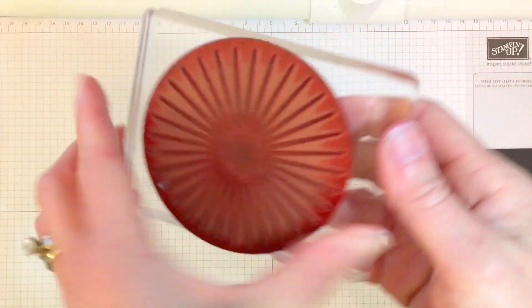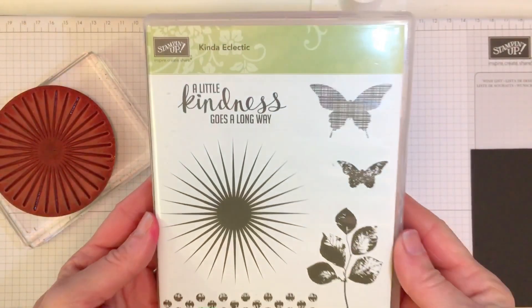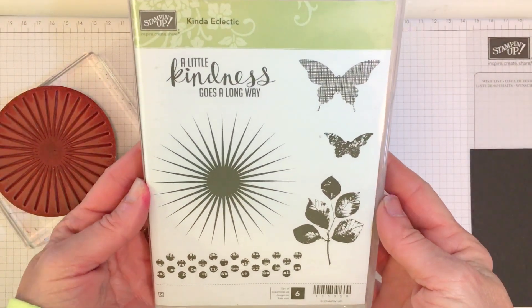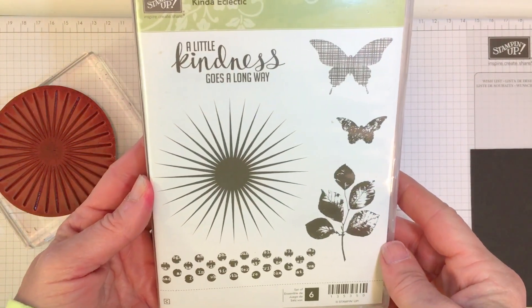Now, to make the medallion, I'm going to take, believe it or not, another retiring set, kind of eclectic. I'm sorry for the shadows. And I'm using this sunburst to create the lines on the medallion.